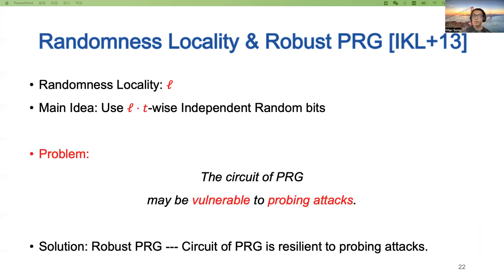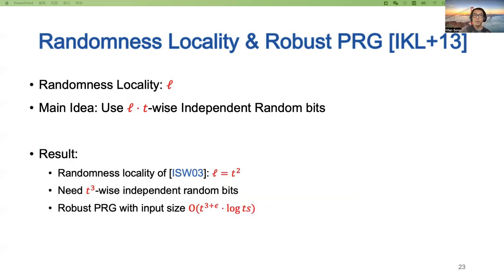Ideally, this allows us to reduce randomness complexity to L·T times some logarithmic factor in the circuit size. However, one problem is that we need to use a circuit to implement the generation of these random bits, and the PRG circuit may be vulnerable to probing attacks. To overcome this, IKL+13 proposes the notion of robust PRGs — a circuit implementation of a PRG resilient to probing attacks. IKL+13 shows the randomness locality of the basic construction is T², so we need T³-wise independent random bits. The authors show the existence of a robust PRG using O(T³·log T) random bits, obtaining a T-private circuit with the same randomness.